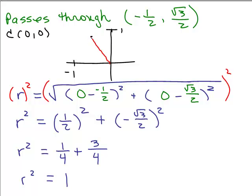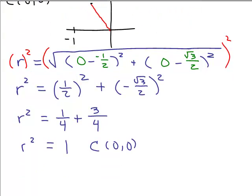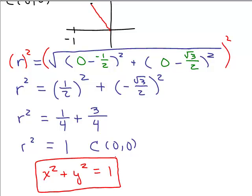So this means our circle — this point is on a circle of radius 1, going through the origin. We know the radius is 1. So let's write the equation of the circle. We know the center is at 0, 0, so it's easy to write in standard form. An equation centered at the origin is just x squared plus y squared equals r squared. That's the equation in standard form, and in this case standard and general form are the same.